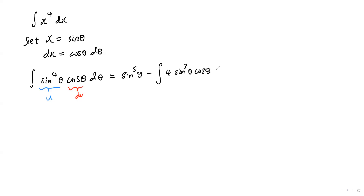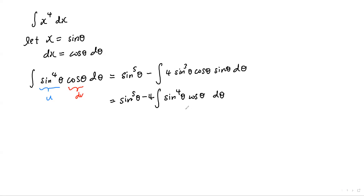So du would be 4 sine cubed theta cosine theta, and v would be sine theta. Simplifying, that gives us minus 4 times the integral of sine to the power 4 theta cosine theta d theta. Notice that this is actually the same integral as the one we started with, so we can collect 5 copies of it.